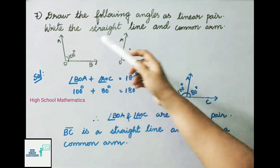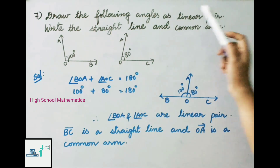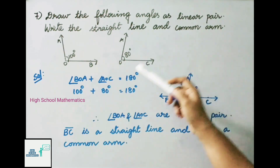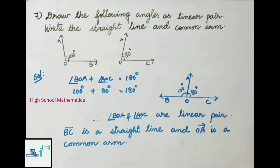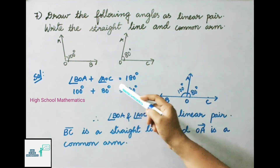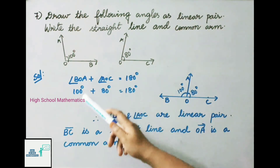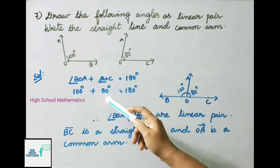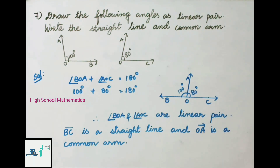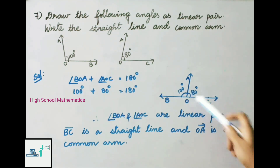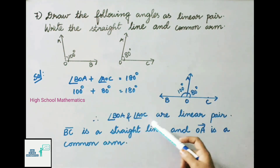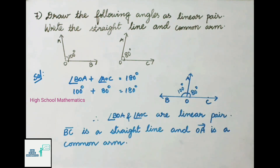Question number seven: draw the following angles as a linear pair — angle AOB equals 100 degrees and angle AOC equals 80 degrees. Angle BOA plus angle AOC equals 180 degrees: 100 plus 80 equals 180. We have drawn angle BOA and angle AOC as a linear pair. Therefore angle BOA and angle AOC are a linear pair, BC is a straight line, and OA is the common arm.